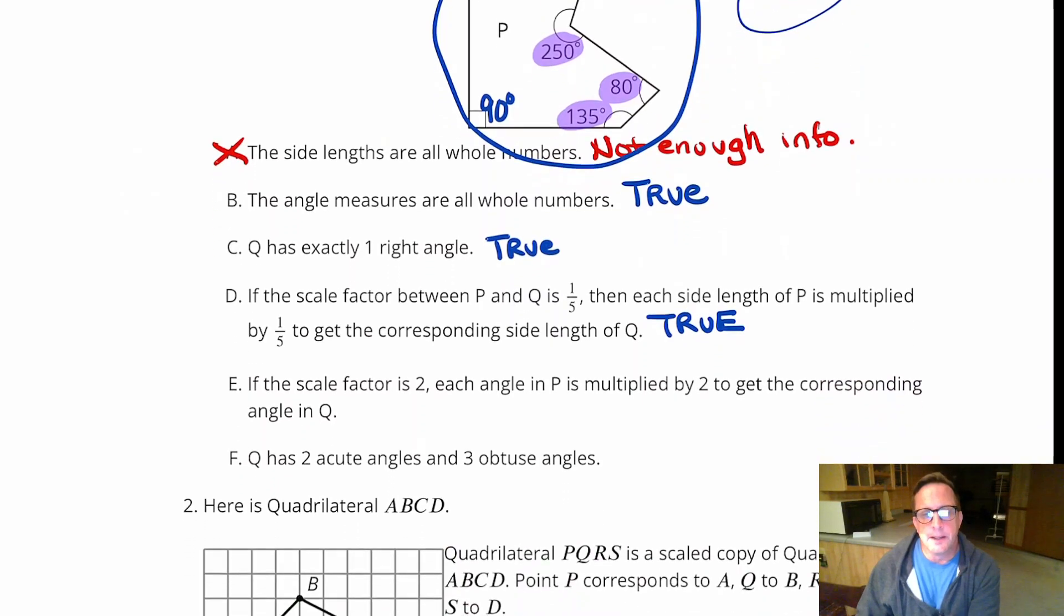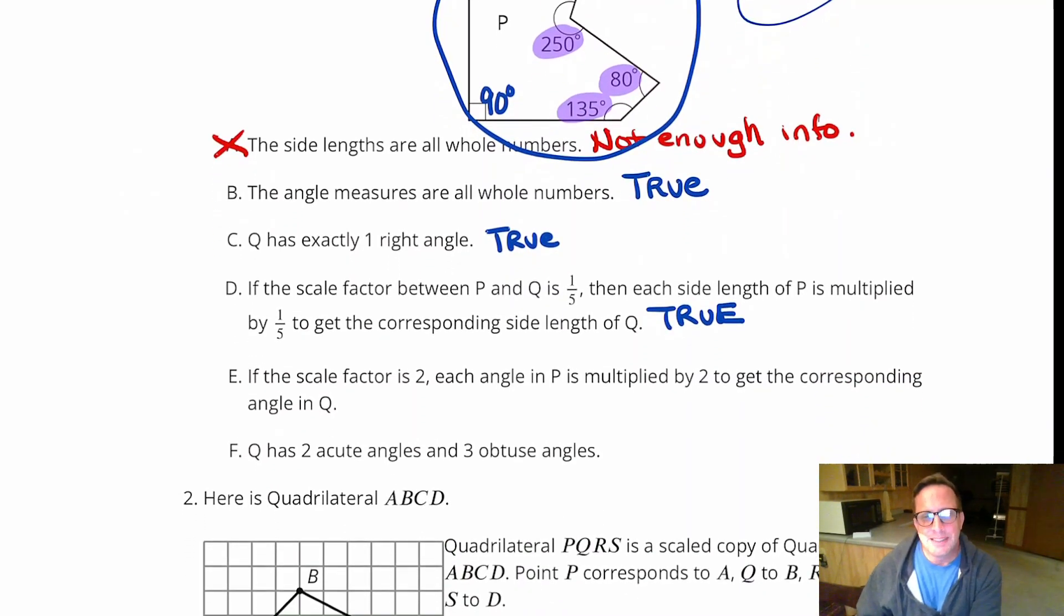For E, if the scale factor is 2, each angle in P is multiplied by 2. That is definitely false. Because we know that angles will not change. Angles are not going to double.